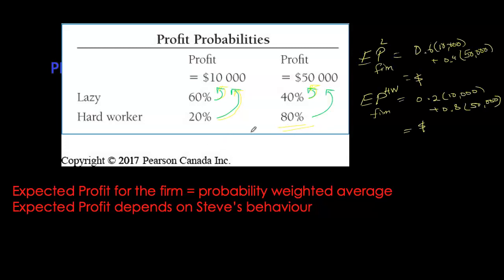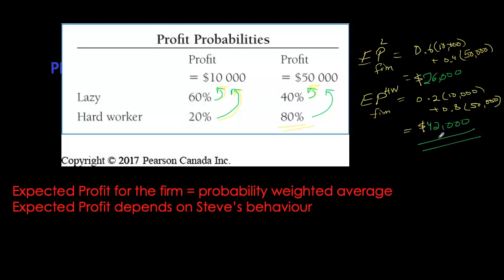We can immediately see that our expected profit for the firm will depend upon our manager's behavior. If Steve is hard-working, our expected profit will be typically higher based on the overall probabilities, and if Steve is lazy, our expected profitability starkly goes down. The probability-weighted average profit when Steve is lazy is $26,000. If Steve is hard-working, with an 80% chance of getting $50,000, the probability-weighted average comes to $42,000.